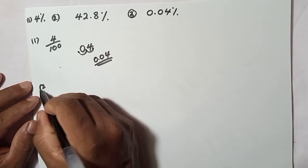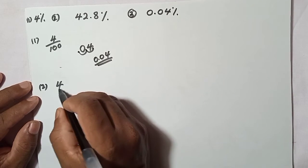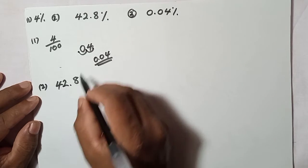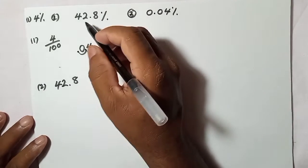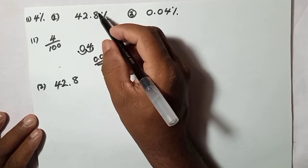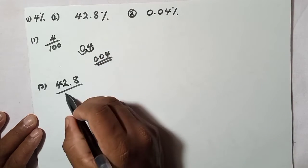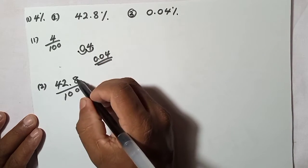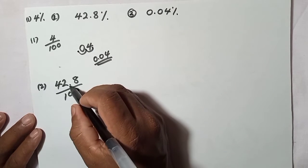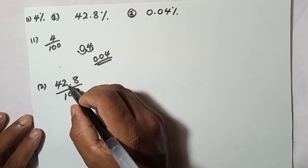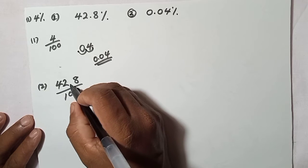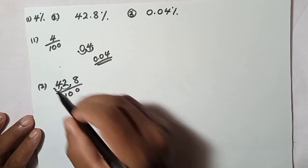Next example: 42.8%. That means 42.8 out of 100. Again, I move the decimal point twice to the front — one, two — so 42.8% as a decimal is 0.428.